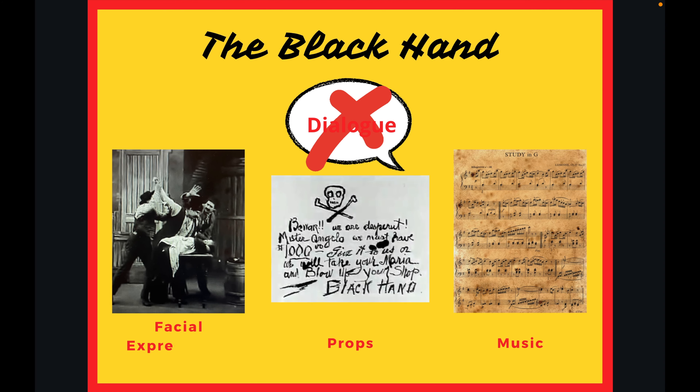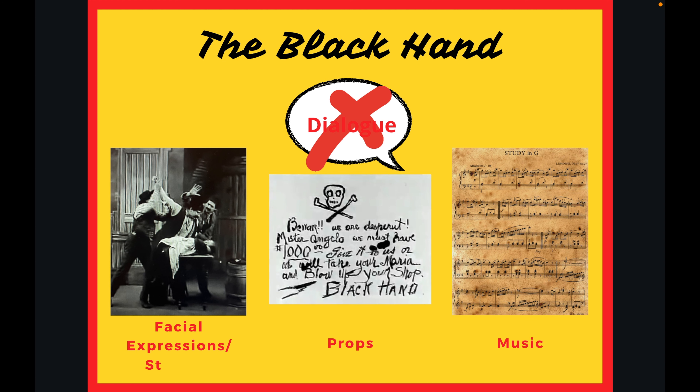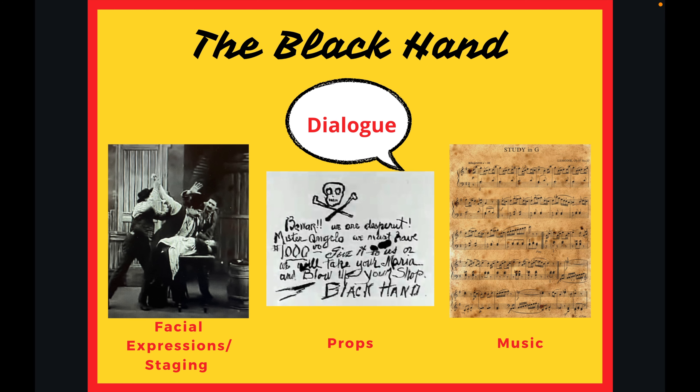To start, the 1906 film The Black Hand is full of cinematic choices that amplify the stereotypes of the Italian-American man. Since the film contains no dialogue, the other cinematic elements, such as facial expressions, props, and music, play a crucial role in conveying who exactly the Italian-American men were — specifically, as corrupt men part of a crime organization.